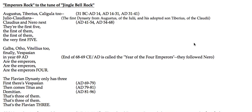Augustus, Tiberius, Caligula, Julio-Claudius, Claudius and Nero next — they're the first five. Galba, Otho, Vitellius, finally Vespasian. In year 69 AD, are the emperors four.